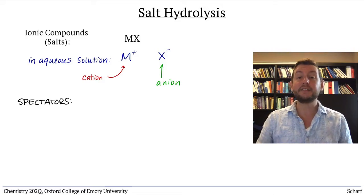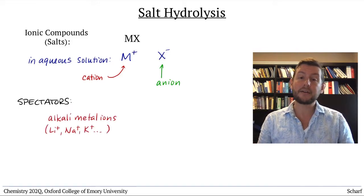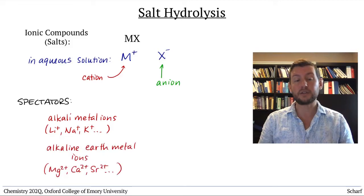Cations that fall into this category are those of the metals from the first two columns of the periodic table, the alkali and alkaline earth metal cations.